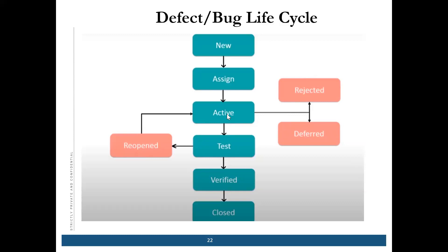If the bug is active, then it should be fixed. Once it is fixed, it will go to the tester — it will move to the tester again, and the tester will test it. After testing, the tester can reopen the defect if it is reproducible or still exists, or if it is verified, the tester will verify it and then close it. This is the happy path.